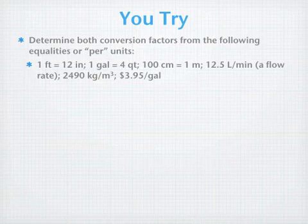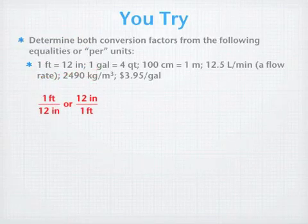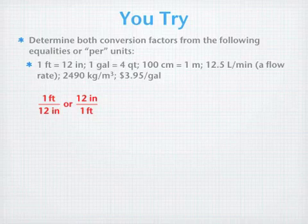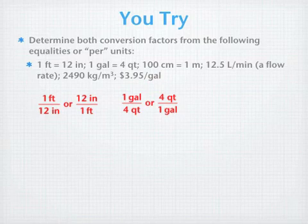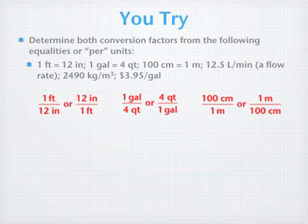I want you to try it now. I've got these 6 equalities. I'm going to pause the video now, and I want you to try to figure out all 12 conversion factors, 2 for each equality. Alright, so we're back, and here's what we have. In our first case, we have 1 foot over 12 inches, or 12 inches over 1 foot. There's 1 gallon per 4 quarts, or 4 quarts per 1 gallon, it really all means the same thing. 100 centimeters divided by 1 meter, or 1 meter divided by 100 centimeters.